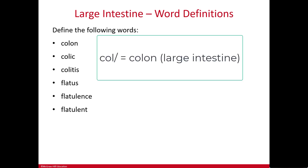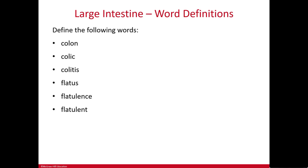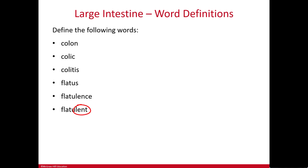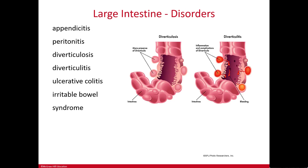Some similar-looking words: colon, colic, and colitis all share the root 'col,' referring to the colon. Colon is the structure; colic means pertaining to the colon; colitis means inflammation of the colon. For flatus, flatulence, and flatulent: flatus is the noun for expelled air; flatulence describes the process of forming that gas; and flatulent is the adjective — you can describe someone as being very flatulent.